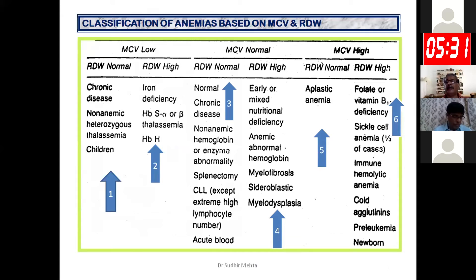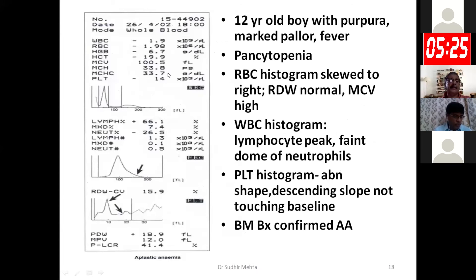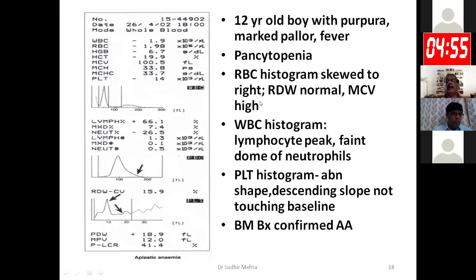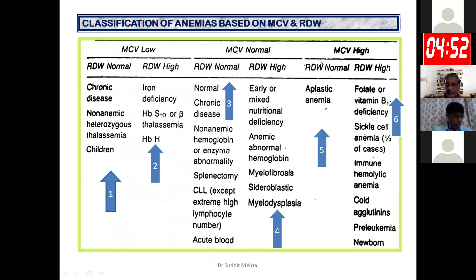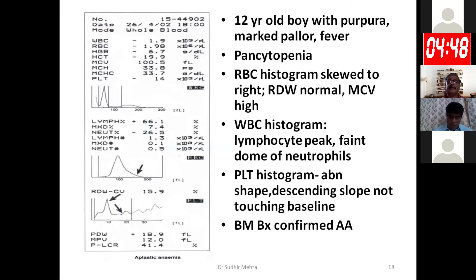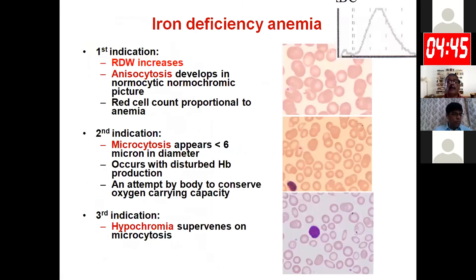This is a CBC report of a boy with purpura, pallor, and fever, showing pancytopenia. The RBC histogram has shifted to the right; RDW is normal, MCV is high. Looking at the WBC histogram, only a lymphocyte peak is present with practically no neutrophil dome. The platelet histogram is abnormal with no descending slope. High MCV with normal RDW, combined with pancytopenia, fits the classification of aplastic anemia, which must be confirmed by bone marrow examination.